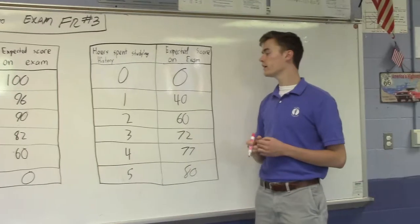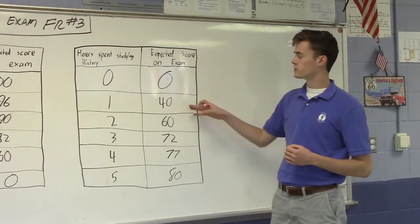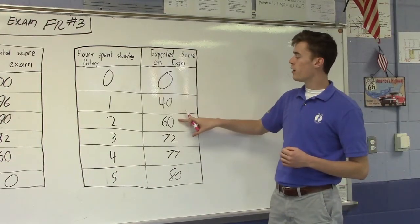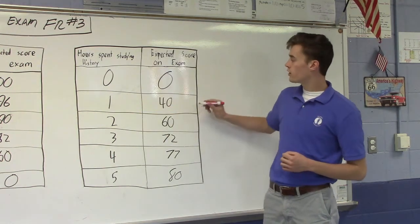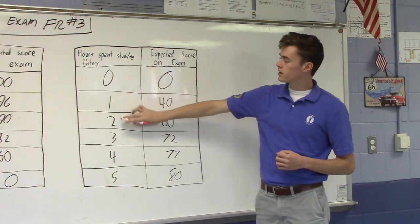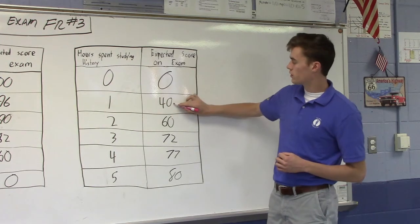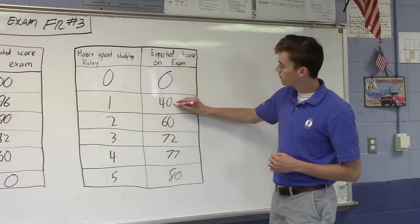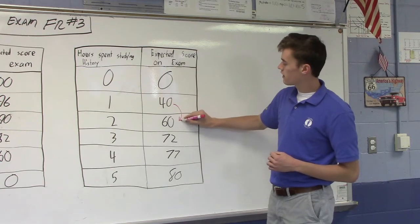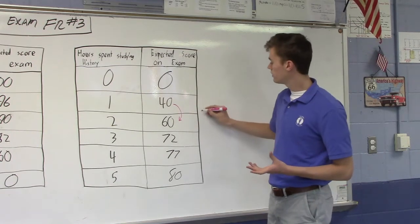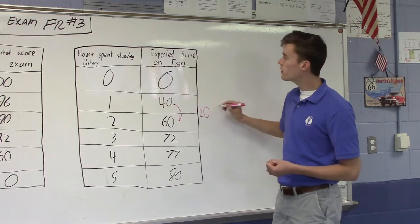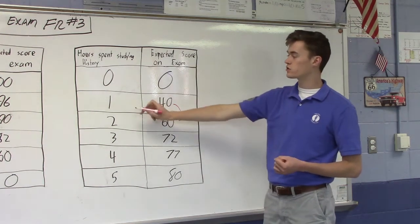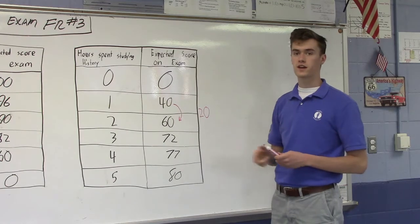Alright, so what we're looking for here is marginal utility, which is how much the output increases with an additional unit of input. So we go from one hour spent studying history to two hours spent. So we go to the output and we see it goes from 40 to 60. Some simple arithmetic here. You see that this is 20. So she gains 20 points on her history exam with the additional hours spent for the second hour.